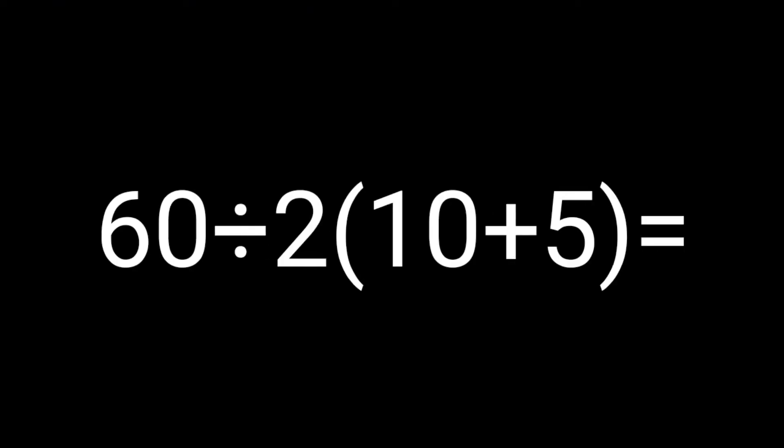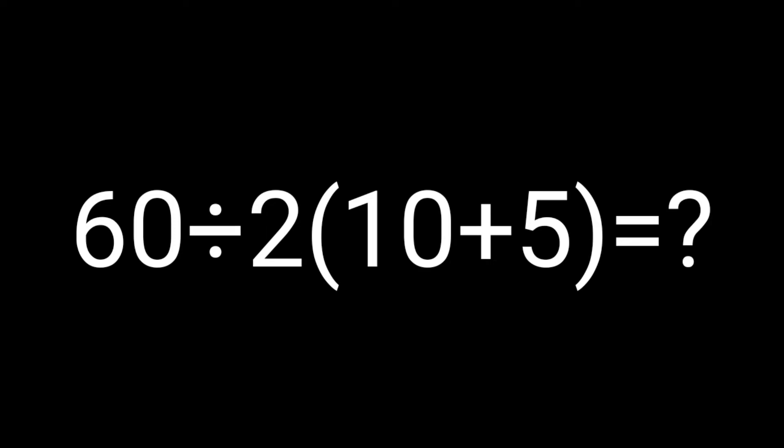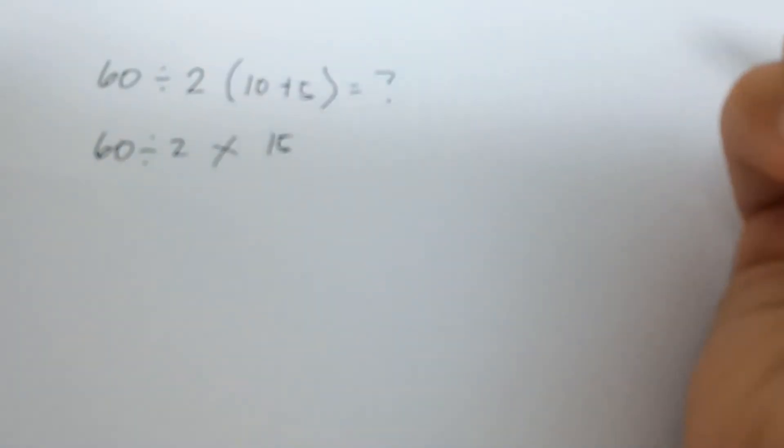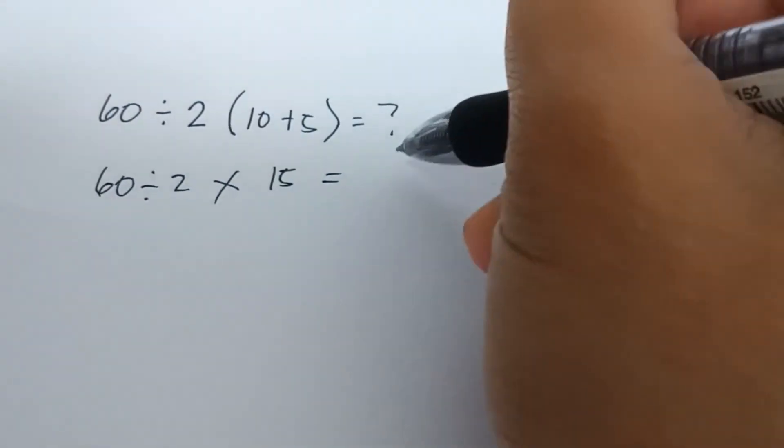And now I will show you the solution of this tricky equation. So guys, we need to apply the rules of mathematics which is BODMAS. So we need to compute the bracket first, then division and multiplication. So 10 plus